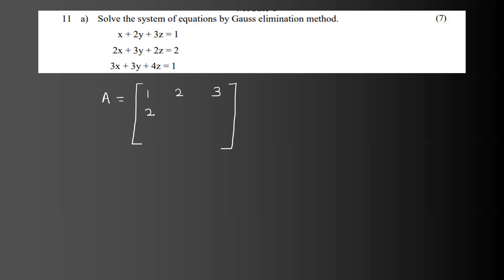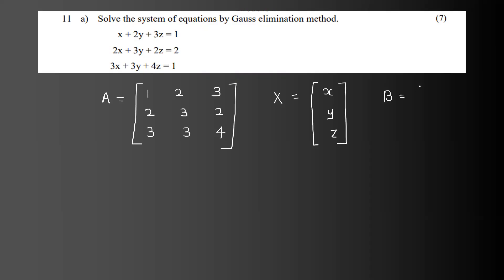Second, x equals 2. We have 3 equations. The variables here are Capital X, Y, Z — there are three variables. This is the right side of the values, which we call B. That is 1, 2, 1.